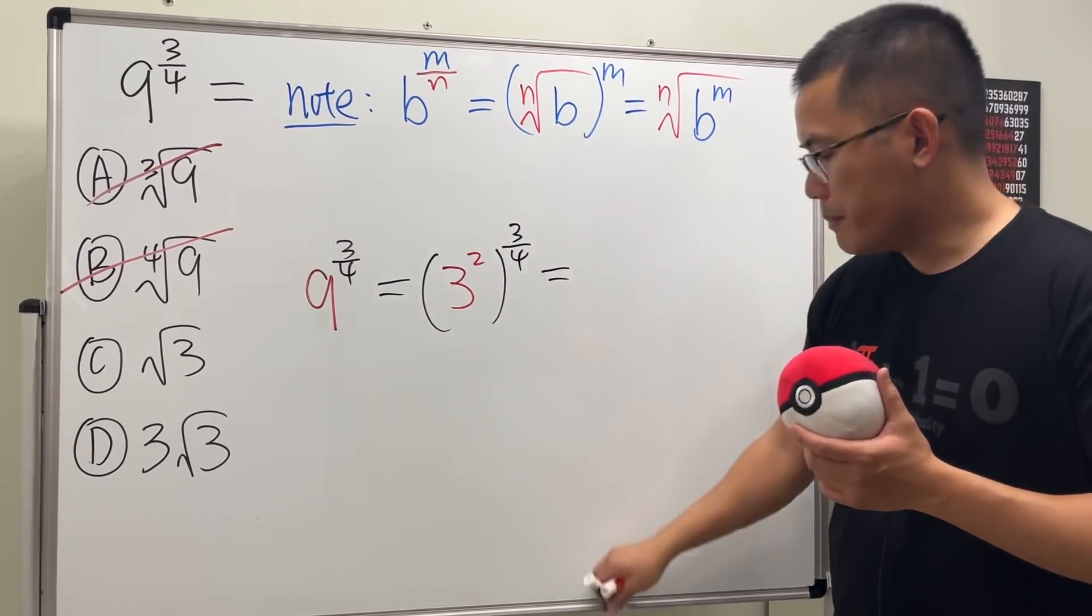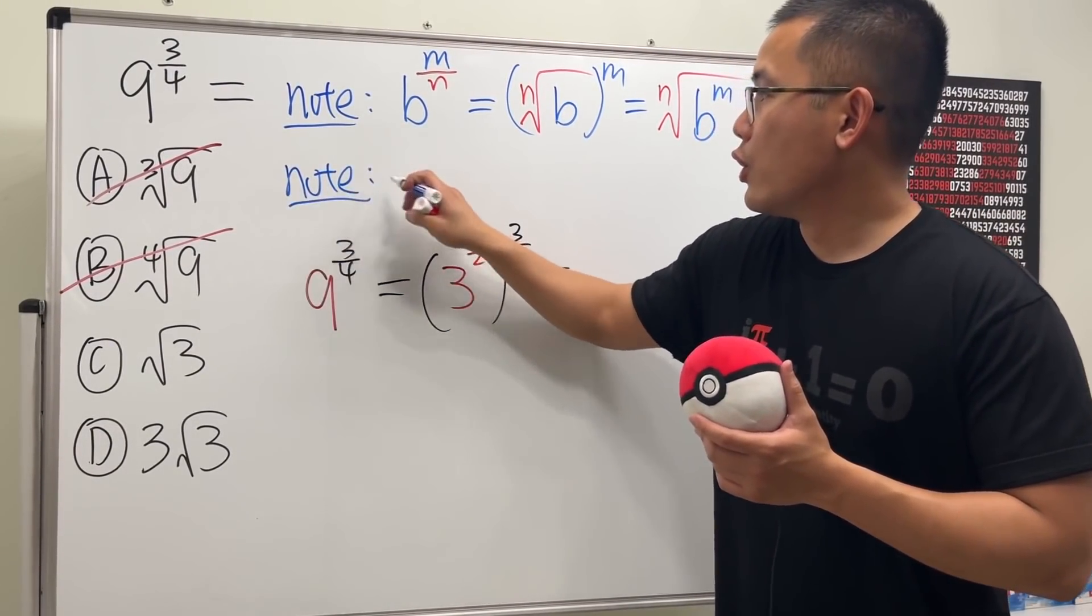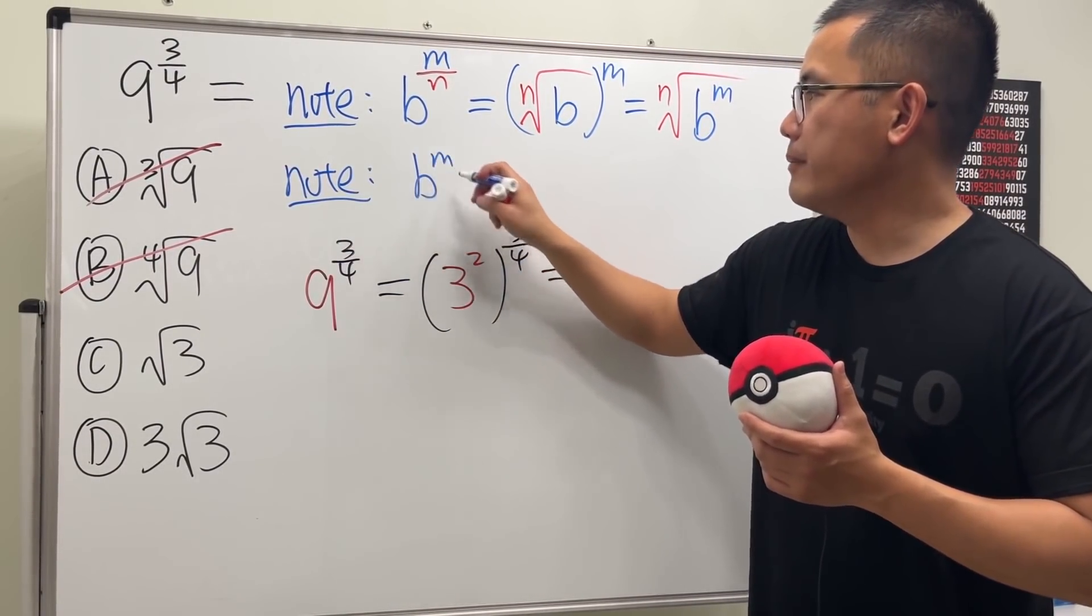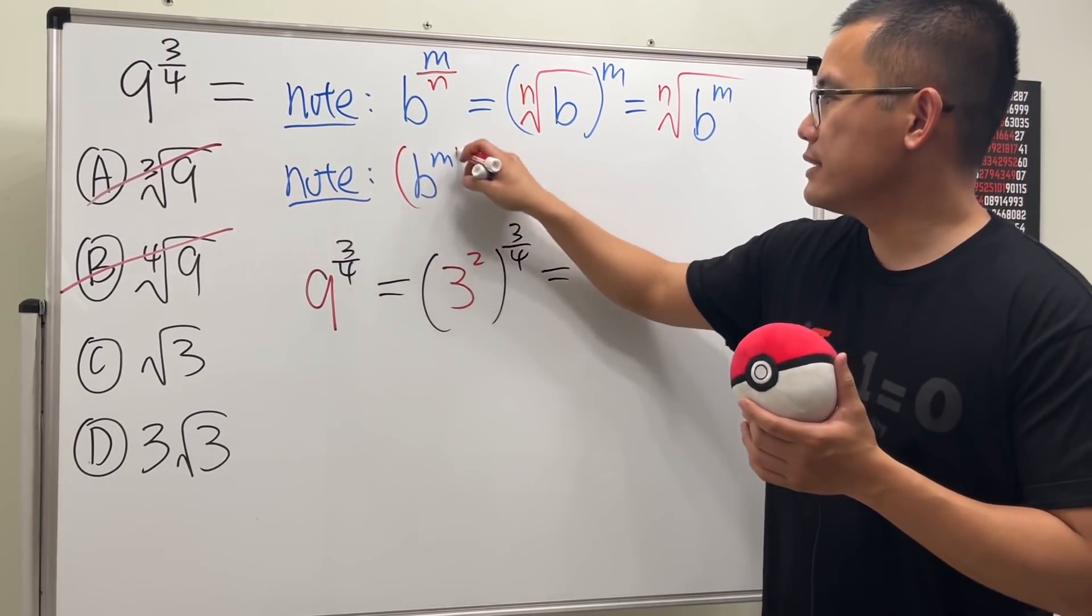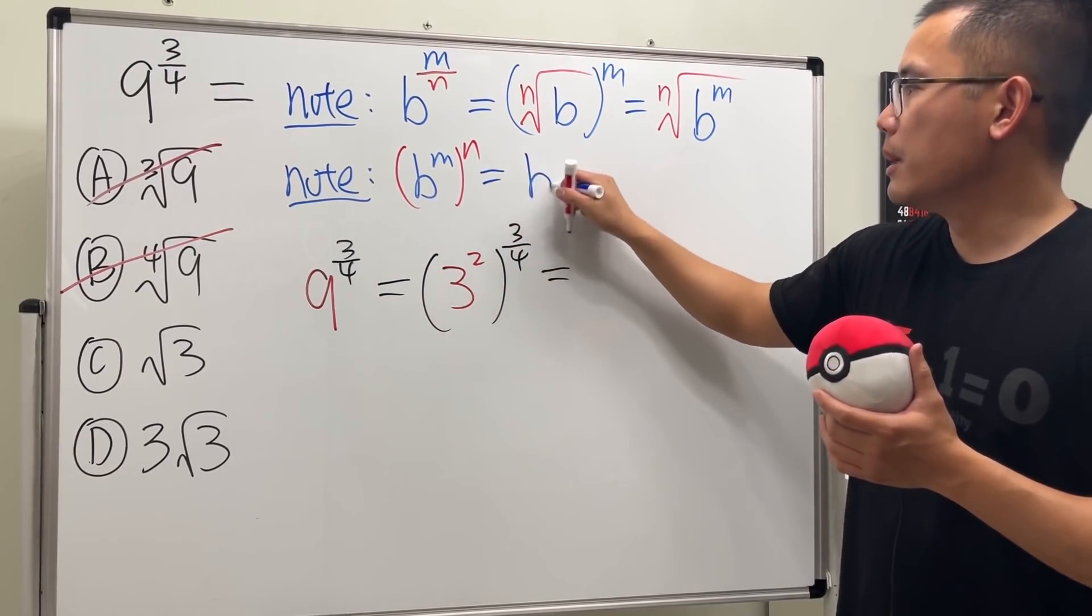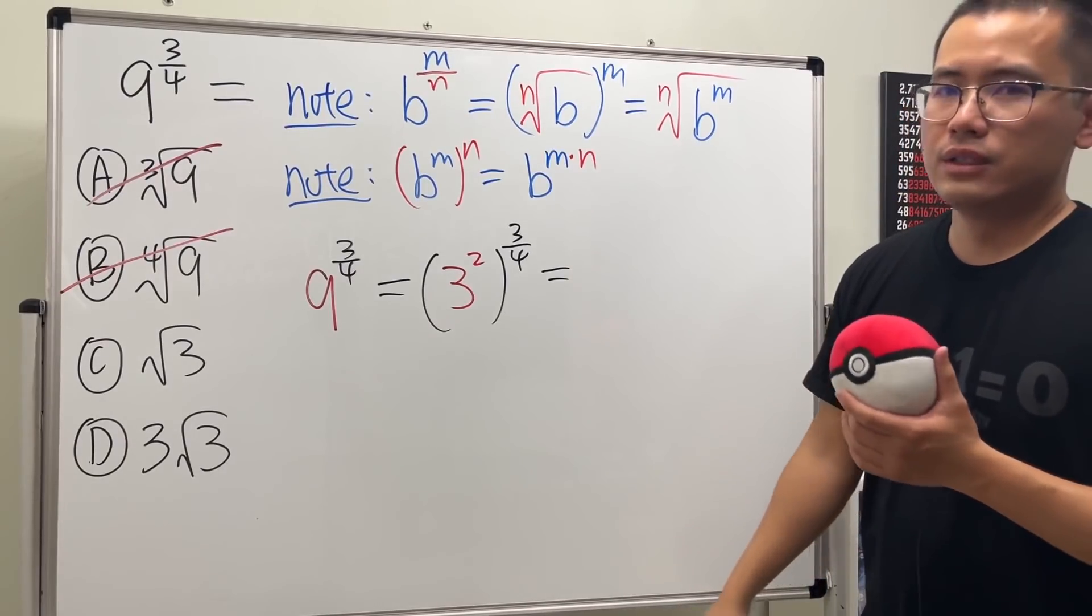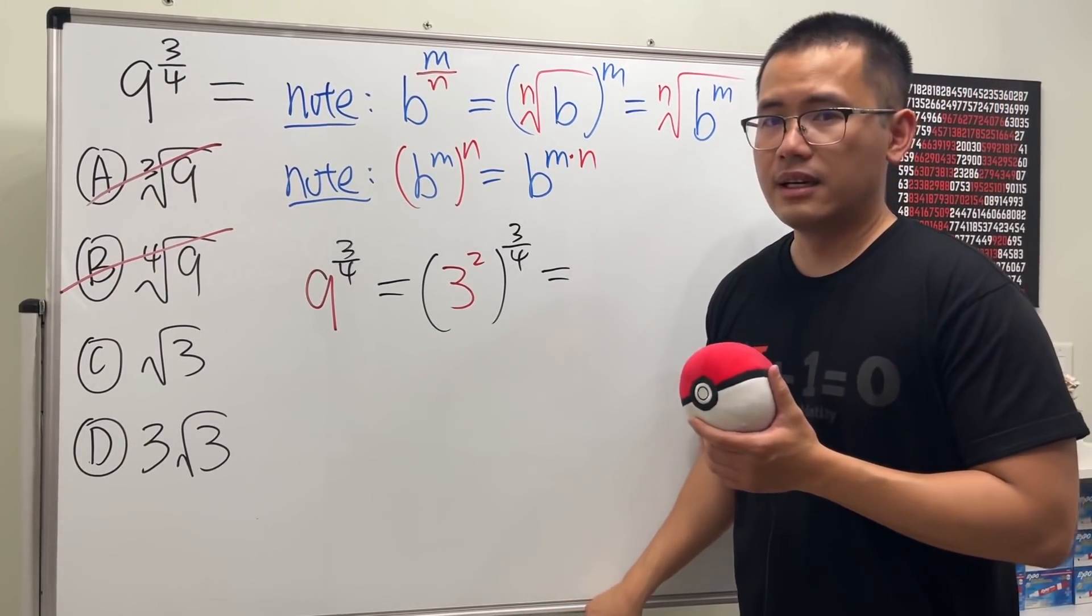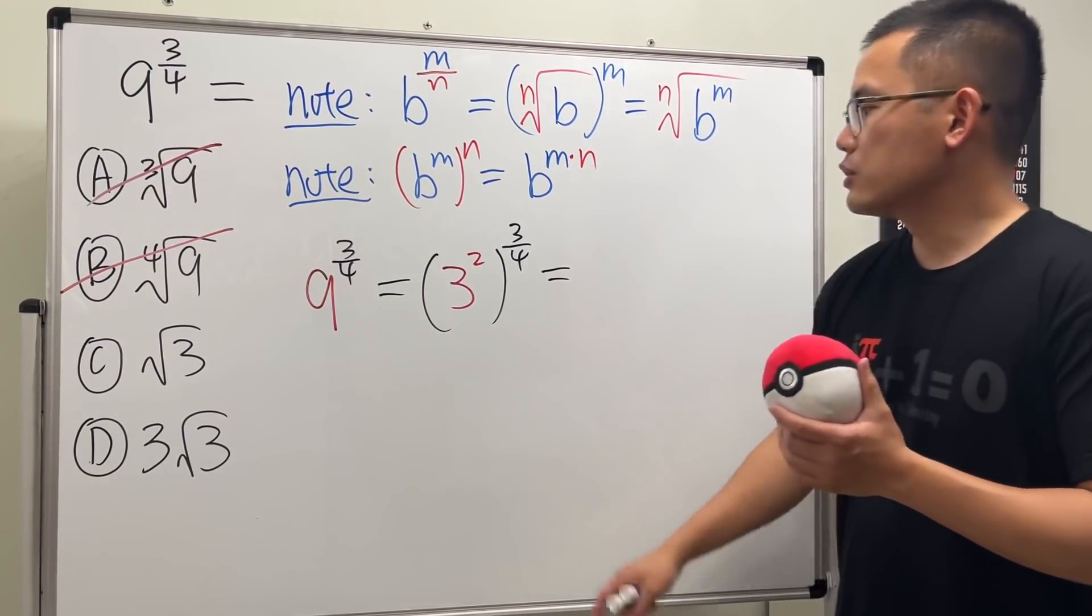And the reason we want to do this is because now we can multiply the powers. Remember, another notice: when we have b to the n, right, when we have b to a power and then if we raise that to another power, this right here, we just multiply the powers, b to the m times n. So this right here, I will say it's like the concept of the power rule of exponents.